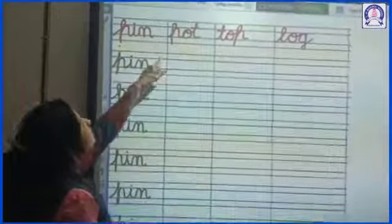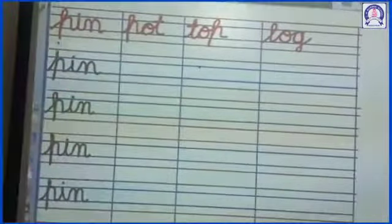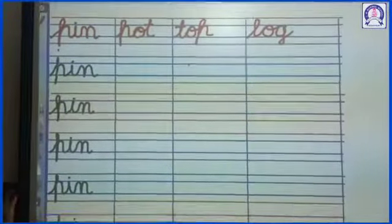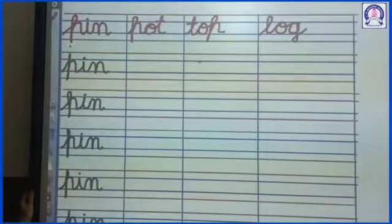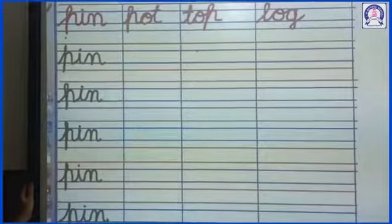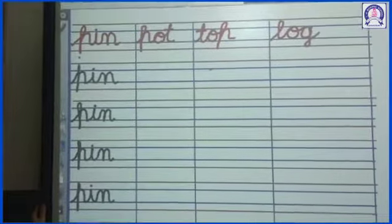Next word. P-O-T pot. Next spelling kya hai. Pot. Pot yaani hai gada. Aapke gado pe jo gada bota hai na, usko pot bolte hai.